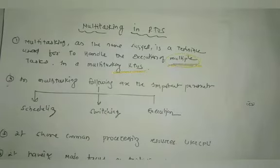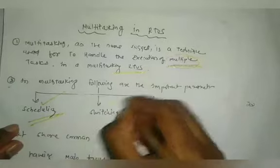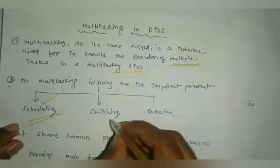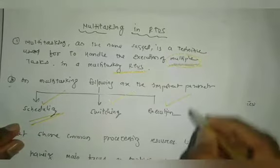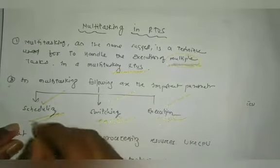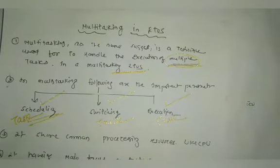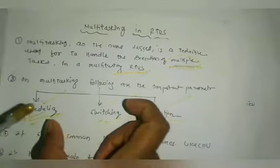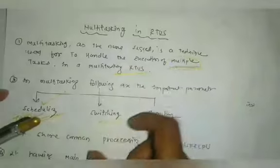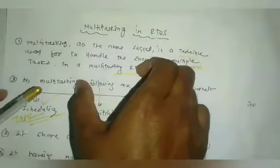In multitasking there are three important parameters. First is task scheduling, second is task switching, and third is task execution. Scheduling means to schedule the tasks — start first, second, third.